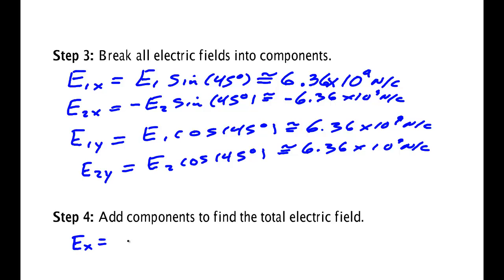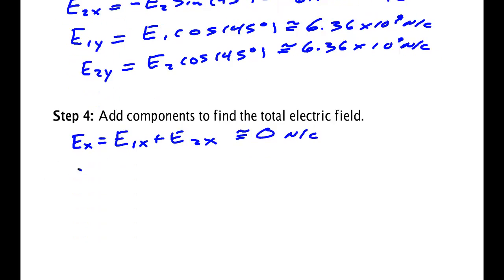The total electric field in the x is E1x plus E2x, and when you do that, you get 0 newton per coulomb. And then you have to do the y components. Ey is E1y plus E2y, and when I do that, I get 1.27 times 10 to the 10th newton per coulomb.